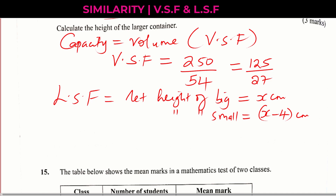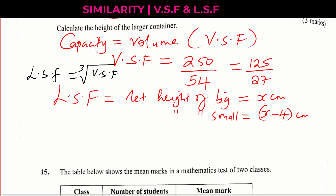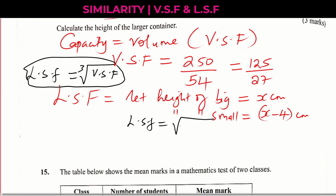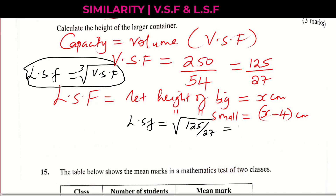How do we obtain the linear scale factor from the volume scale factor? This is very important: the linear scale factor is obtained by getting the cube root of the volume scale factor. So in this case, the linear scale factor will be the cube root of 125 divided by 27. The cube root of 125 is 5, and the cube root of 27 is 3. So the ratio of the heights of these two similar containers will be 5 divided by 3.